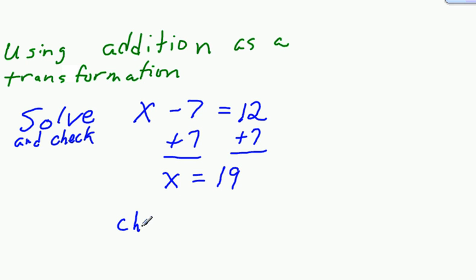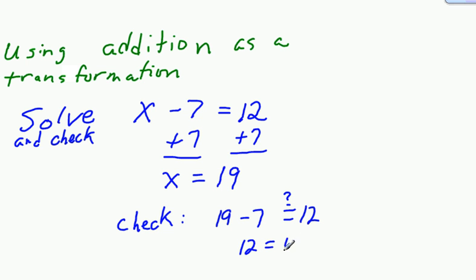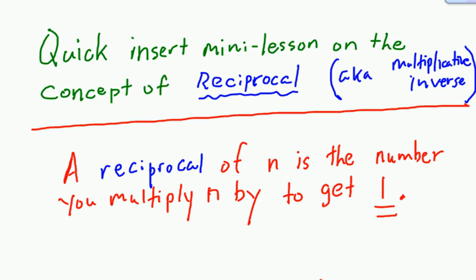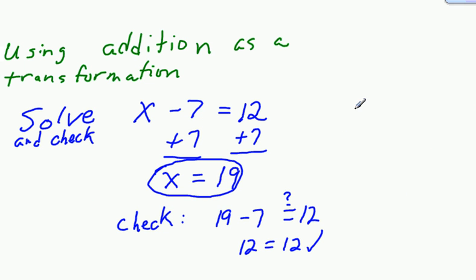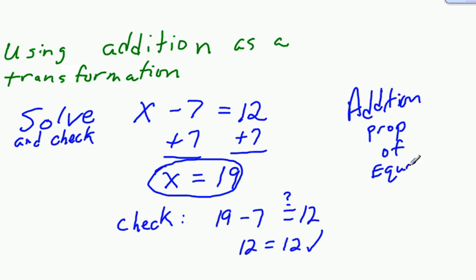Then I'm going to check it by plugging back in. I'll ask myself: does 19 minus 7 equal 12? It does — 12 equals 12. So the solution for this equation is 19. This uses the addition property of equality, which says that if you add the same amount to both sides of an equation, the equation will still hold true.